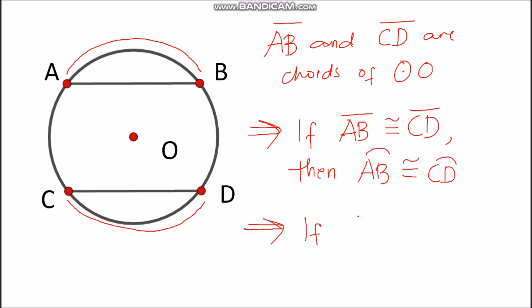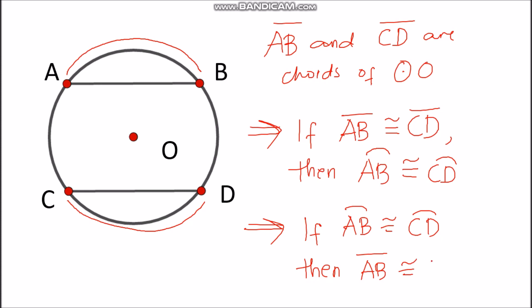Since this is an if and only if statement, it works vice versa as well. We can also start with the arcs: if arc AB is congruent with arc CD, then we can also conclude that the corresponding chords are congruent.